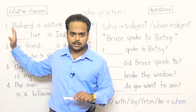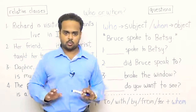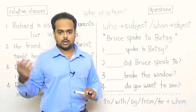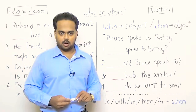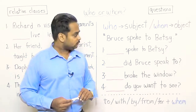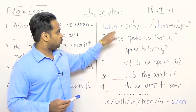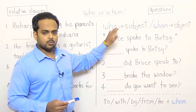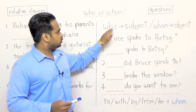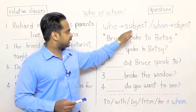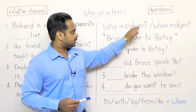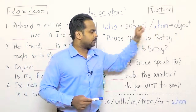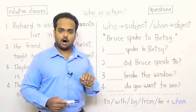If you're not sure what that means, don't worry, I will explain it to you when we get to that part. Now here's the rule with using who and whom: who is used in the place of a subject and whom is used in the place of an object.